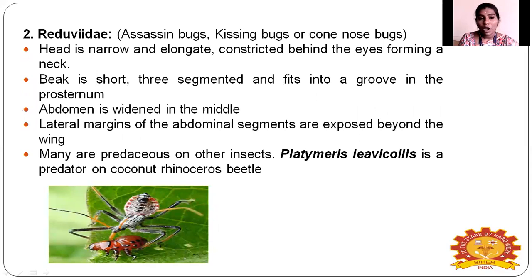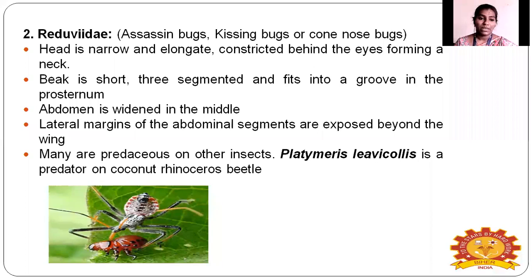Next: Reduviidae, commonly called the assassin bug, kissing bug, or cone nose bug. The head is narrow and elongated, opisthognathous type, constricted behind the eye forming a neck region. The beak is very short and three-segmented, fitted into a groove on the pronotum. The abdomen is widened in the middle and the lateral margins of abdominal segments are exposed between the wings. Many species are predators; for example, Platymeris laevicollis is a predator of the coconut rhinoceros beetle.